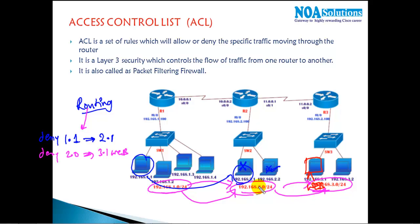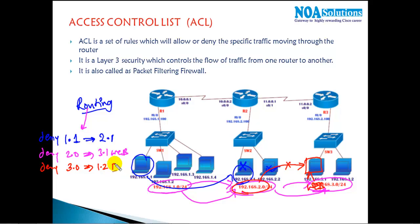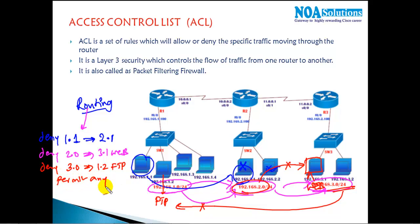Assume 3.1 is my web server and I want to ensure that users from the 2.0 network cannot access the web service on 3.1 — only the web service — but they can still access other services on that computer like FTP or Telnet. Or you can write a rule to deny the 3.0 network from accessing the 1.2 FTP server, while permitting all remaining traffic.